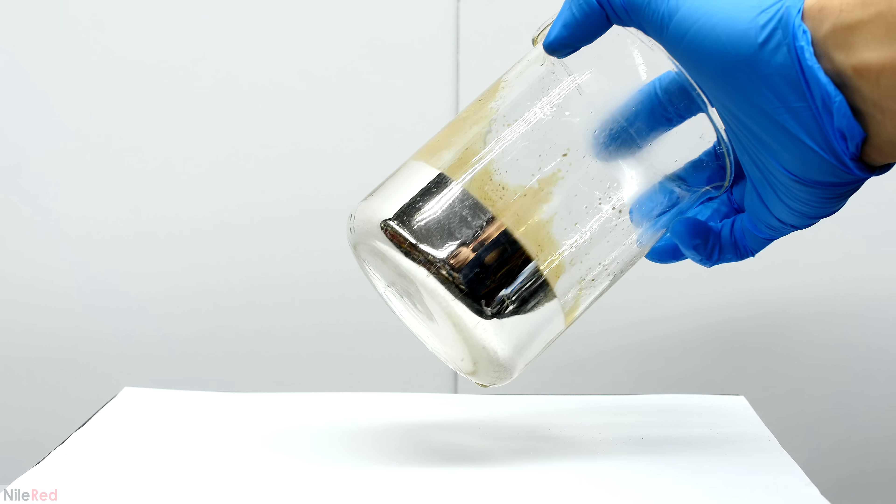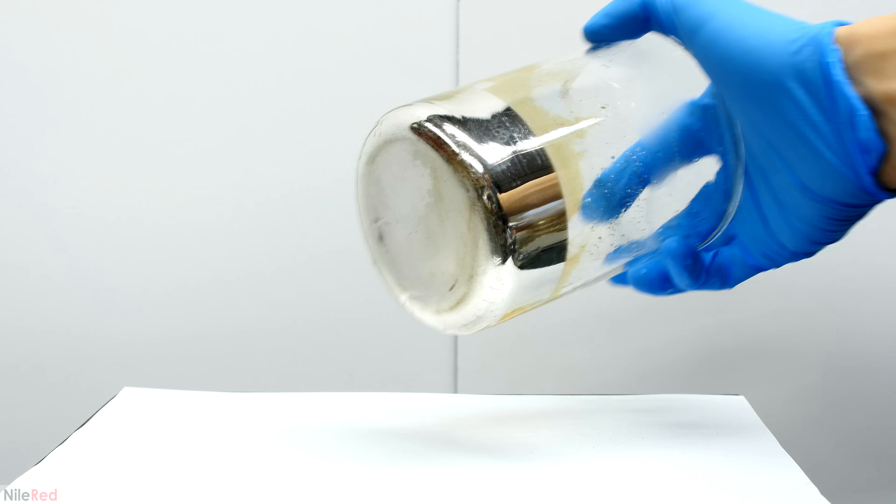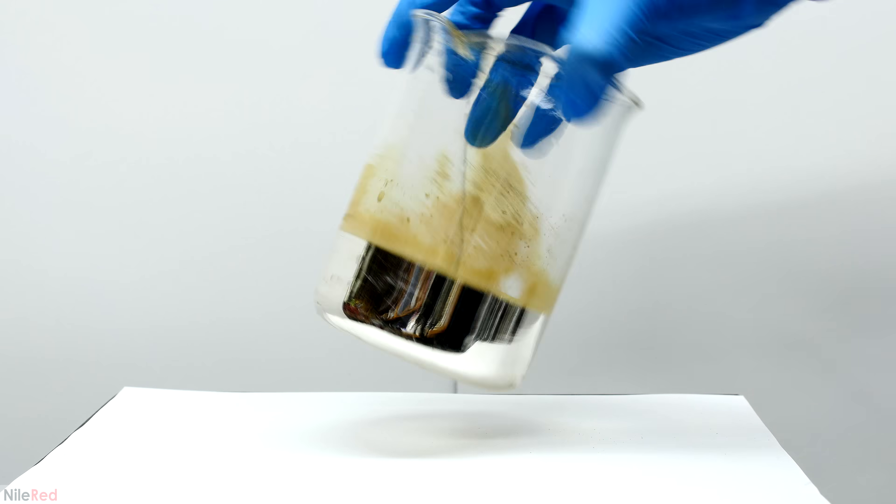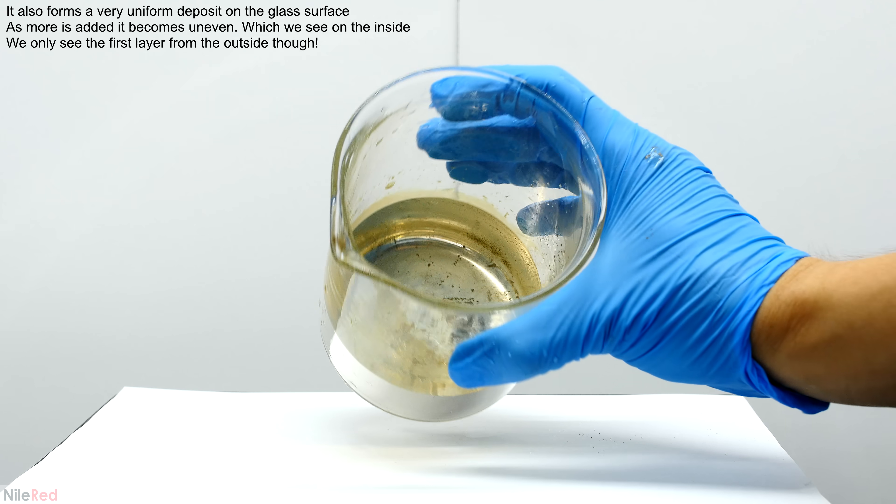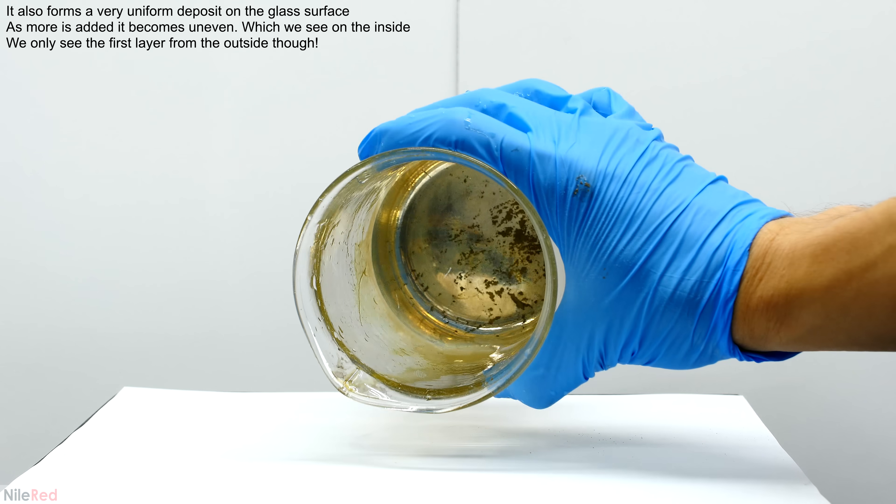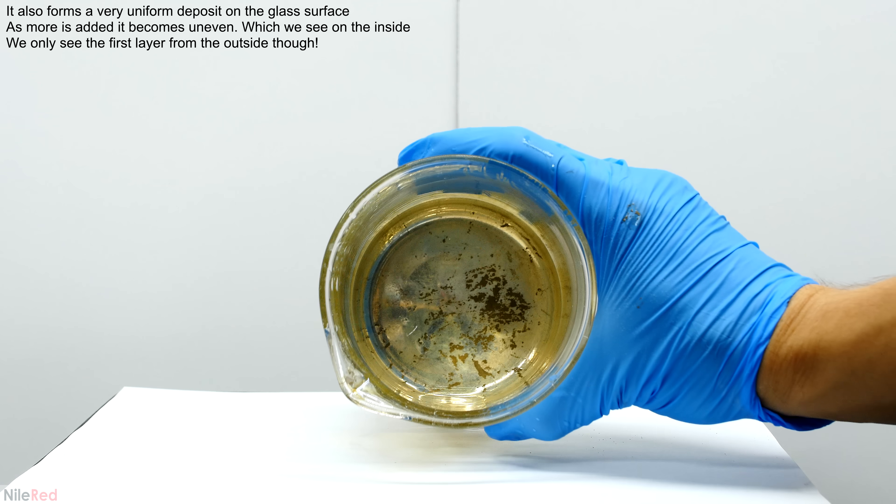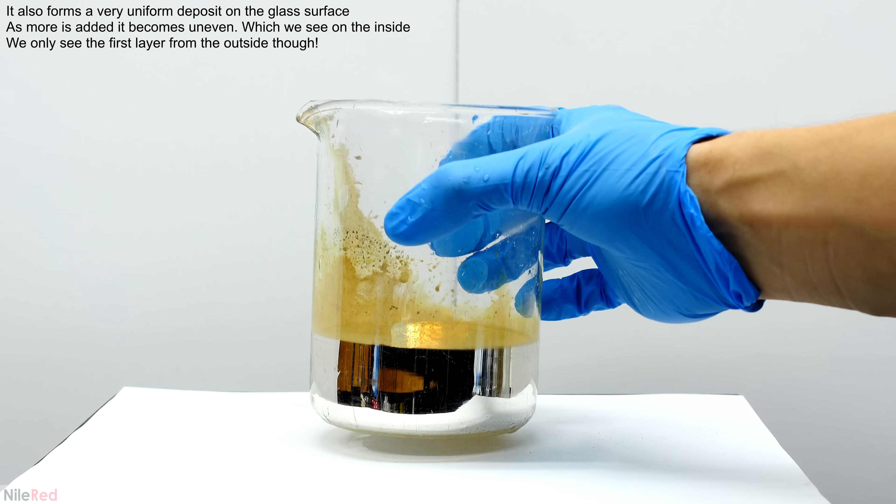When looking at it from the outside, the mirror is very nice, but when we look at the inside, it's kind of gross. The silver that we see in the beaker is exposed to air and it gets oxidized, but the silver that we see from the outside is protected from this and remains shiny.